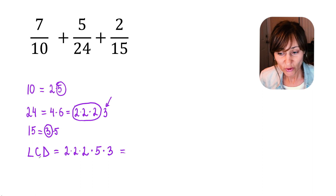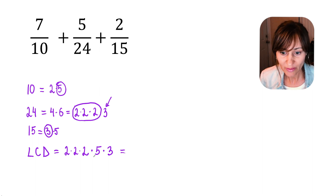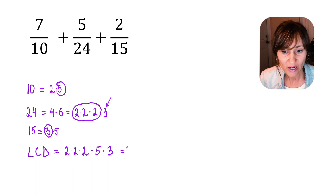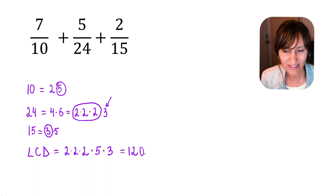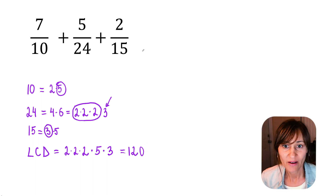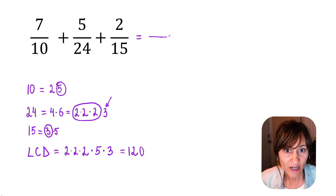Now, to get the LCD, we will just multiply these prime factors. 2 times 2 times 2 times 5 times 3 will give us 120. So the least common denominator is 120. Now we need to rewrite each fraction with a common denominator of 120.